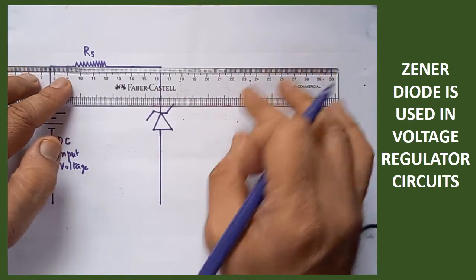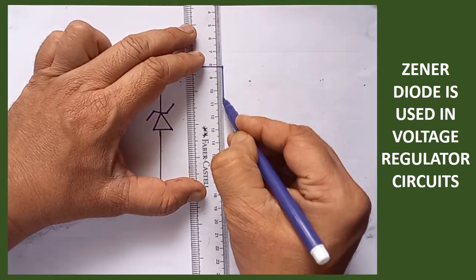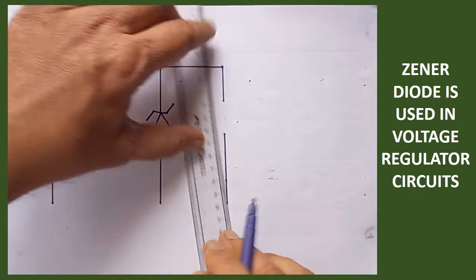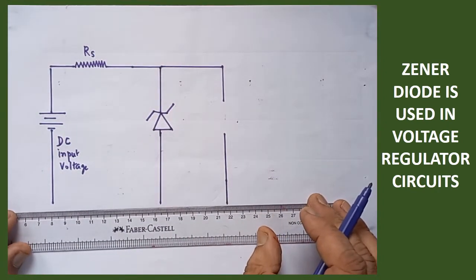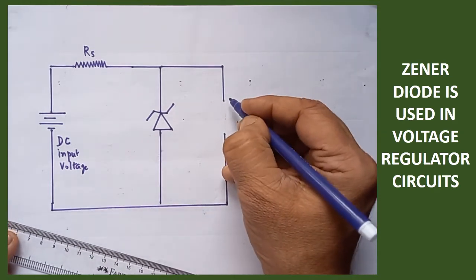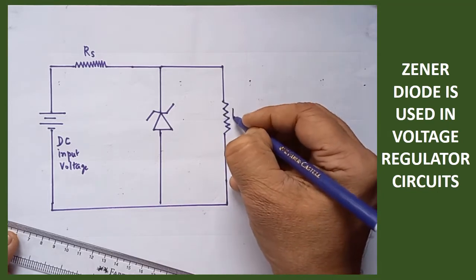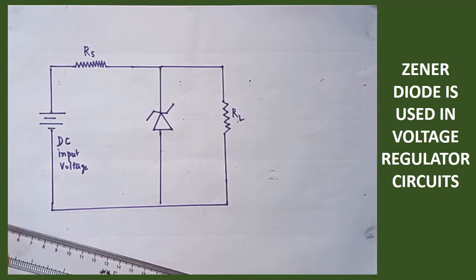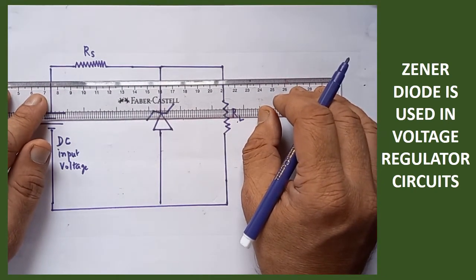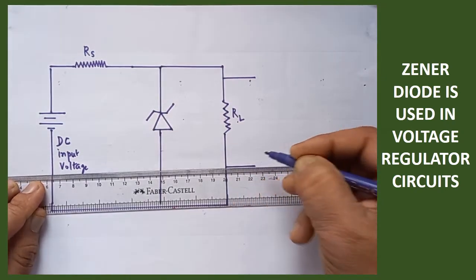Then finally, on the output side, we are going to connect one resistance. The name of the resistance is called load resistance. Wherever you get the output, on the output side, one resistance must be connected — the load resistance, RL. Across the load resistance alone we are able to get the output. That is why this is called load resistance RL. Across these two terminals we are able to get the constant output voltage.